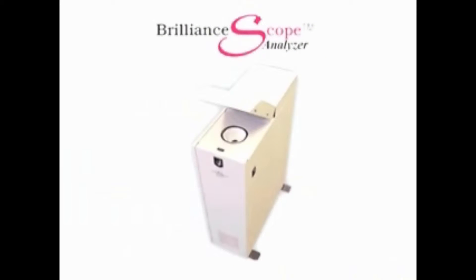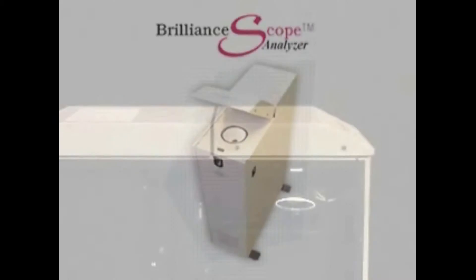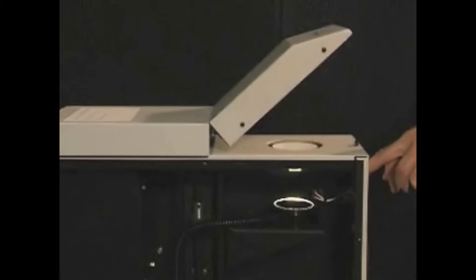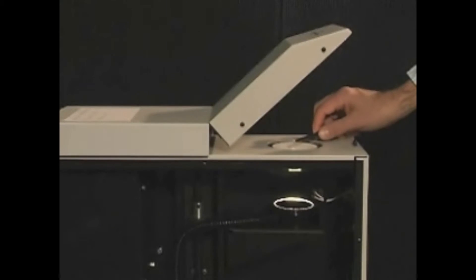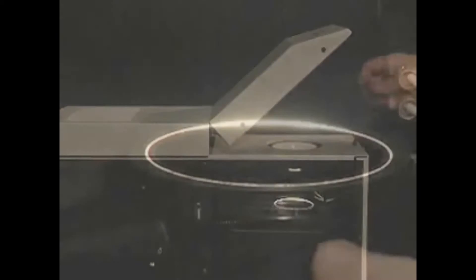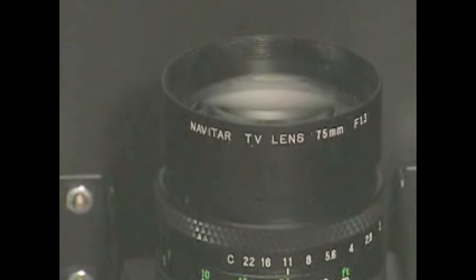Now let's move over to the BrilliantScope analyzer to see it in action. As you can see, the analyzer is the same observation environment as the viewer, only upside down. The diamond is placed table down on the glass. The sphere with the opening is below it, as is the light ring, the camera, and the spectral filter that replaces your eye.